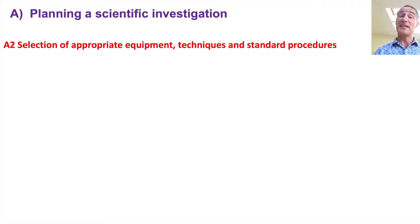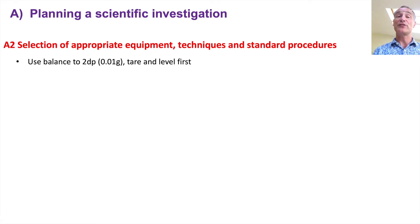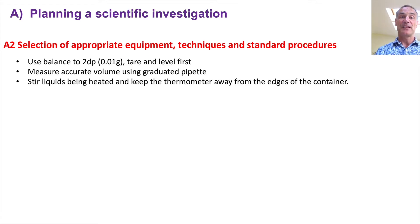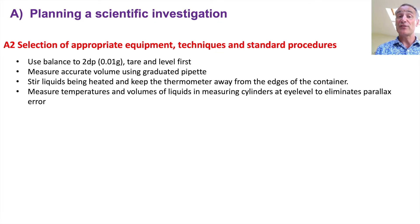The next part is selection of appropriate equipment, techniques and standard procedures. For example: using a balance to two decimal places (0.00 grams), taring and levelling it first, and calibrating it would be a standard procedure. Measuring accurate volumes using a graduated pipette. Stirring liquids being heated and keeping the thermometer away from the edges of the container. Measuring temperatures and volumes of liquids in measuring cylinders at eye level to eliminate parallax error.